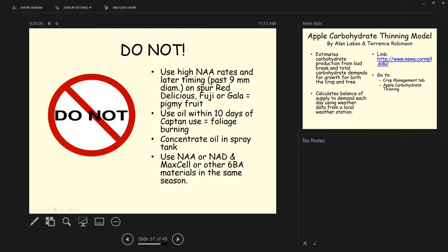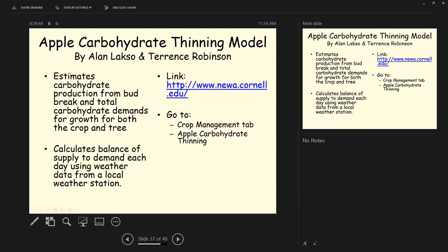Don't use high NAA rates and later timings past nine millimeter diameters on red spur Red Delicious, Fuji, or Gala, you'll get pygmy fruit. Don't use oil within 10 days of captan use. Some people like to spread it out a little bit further than that. You don't concentrate oil in the spray tank and don't use NAA or NAD and Maxell or other 6-BA materials in the same season.